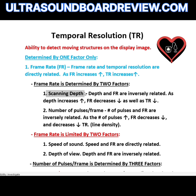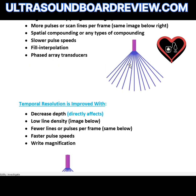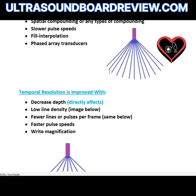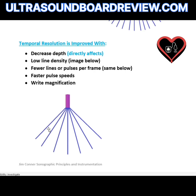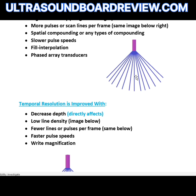Frame rate is determined by two factors. The first is scanning depth — depth and frame rate are inversely related, so as depth increases, frame rate and temporal resolution decrease. The second is the number of pulses per frame, which is also inversely related to frame rate and temporal resolution, so as the number of pulses goes up, temporal resolution and frame rate go down. In this diagram, each line represents one pulse. The image with fewer scan lines will have the best temporal resolution and frame rate because there are fewer pulses per frame.